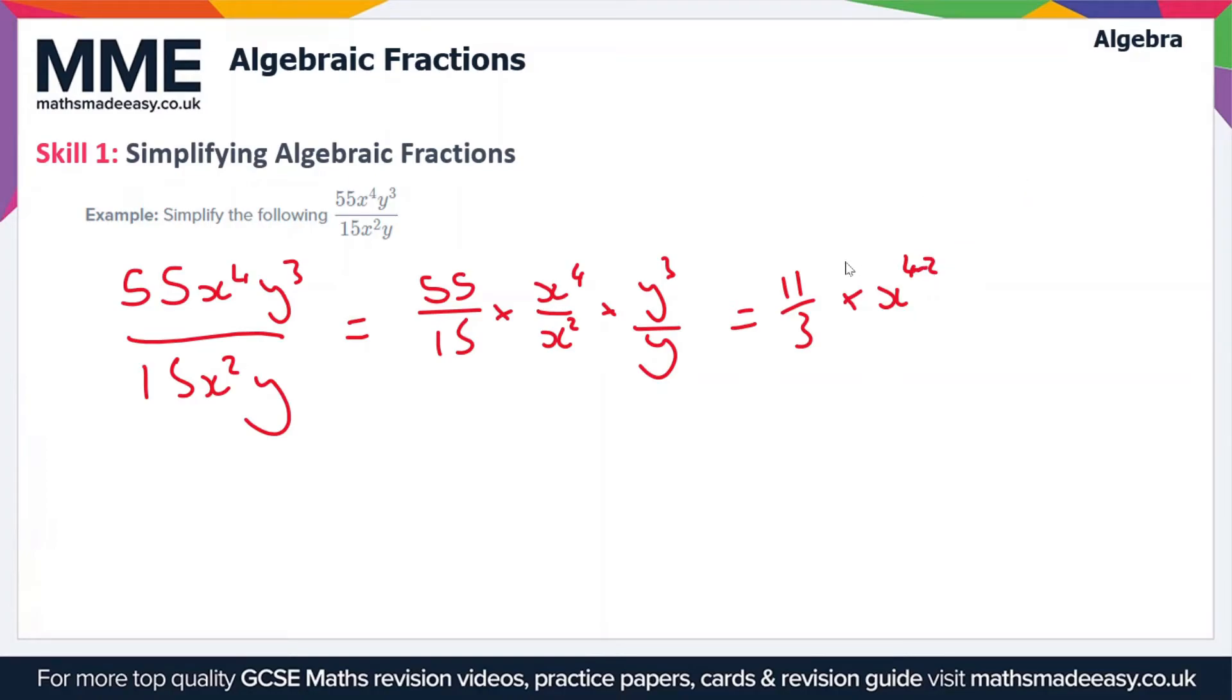That's a minus sign in there. And we do the same with the y cubed over y, so that gives us y to 3 minus 1. If you simplify this, you get 11 over 3 times x squared times